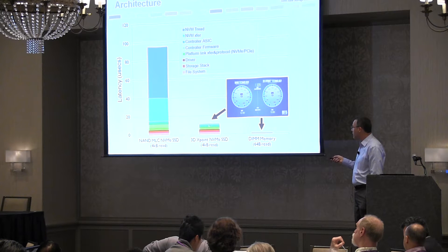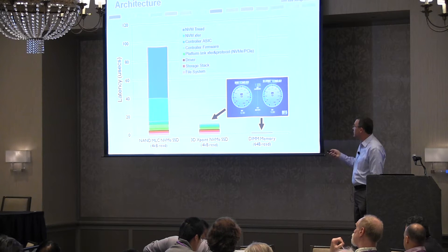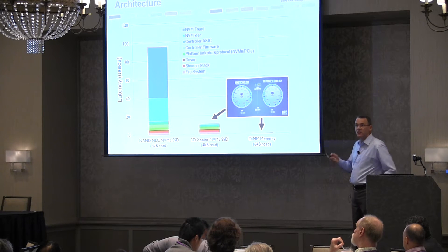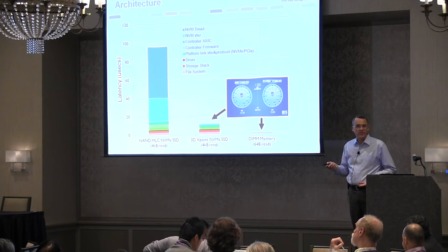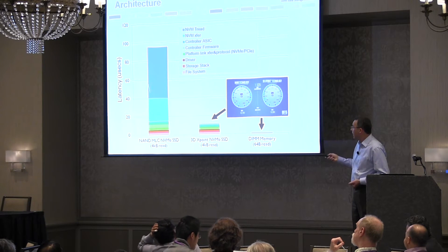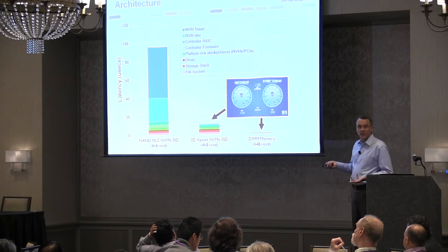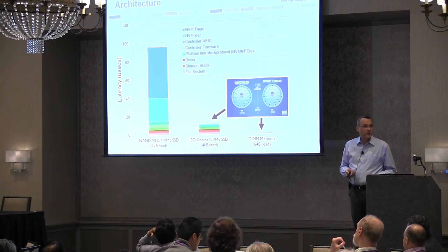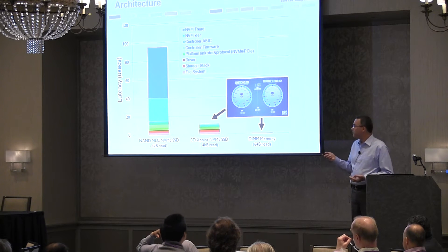Controller latency, and you still have list latency. You see that this is your 7x because most of the things in this stack didn't change. The media did a lot. And you can see if this blue goes to zero, it doesn't really do much. So that's the problem.